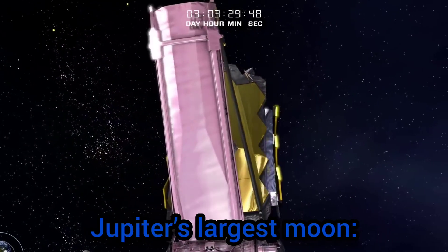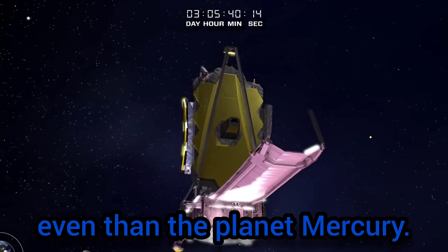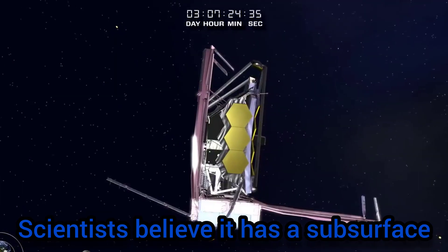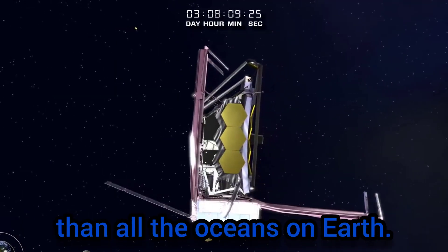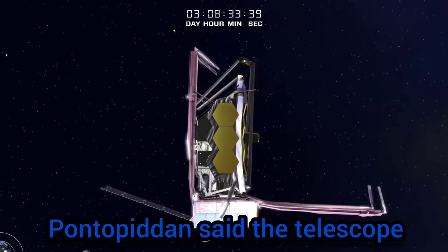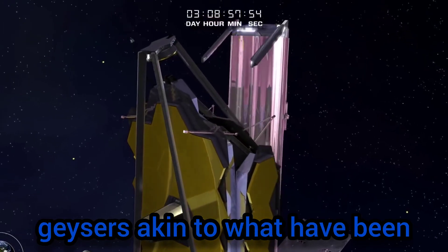Ganymede, Jupiter's largest moon. It's the largest moon in the solar system and is bigger even than the planet Mercury. Scientists believe it has a subsurface ocean with more water than all the oceans on Earth. Webb will be looking for plumes, geysers akin to what have been spotted on Jupiter's moon Europa.